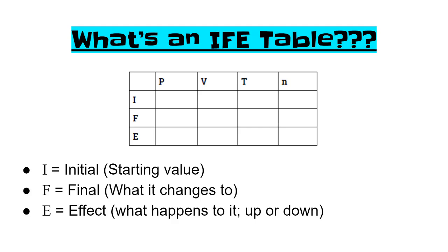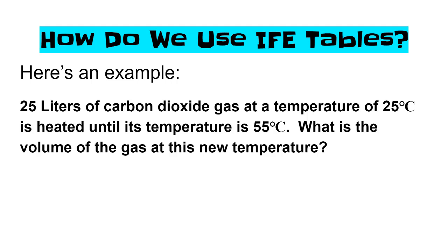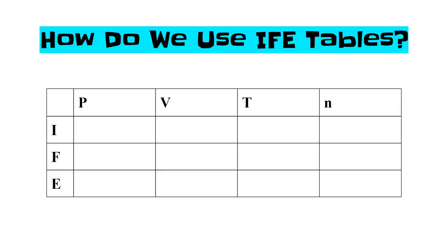Let's take a look at an example. We have 25 liters of carbon dioxide gas. The temperature of that gas is 25 degrees Celsius. We're going to heat it until its temperature goes up to 55 degrees Celsius. I want to calculate the new volume of the gas at this new temperature of 55. There's three numbers in there. We're going to use the table to make the problem super easy. First thing we're going to do is set up the table. I want you to draw this in your notebook or in your notes. Go ahead and pause the video and draw this.